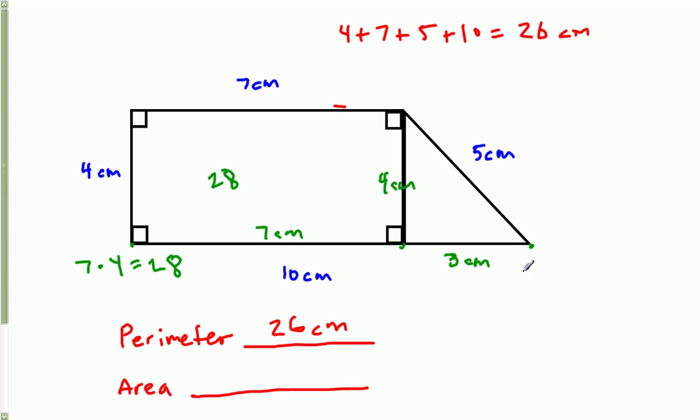So I multiply 4 times 3 equals 12. Then I still need to divide by 2 because the formula for a triangle area is base times height divided by 2. So 12 divided by 2 and that equals 6. So I know the area of this triangle is 6. So if I add the area of the rectangle and the triangle together.